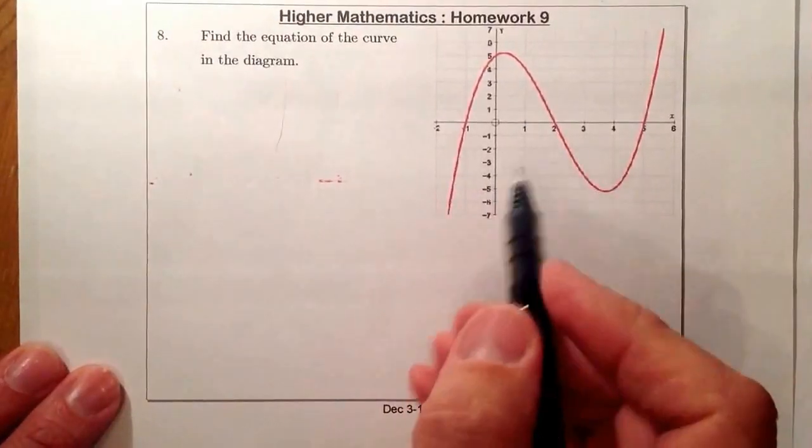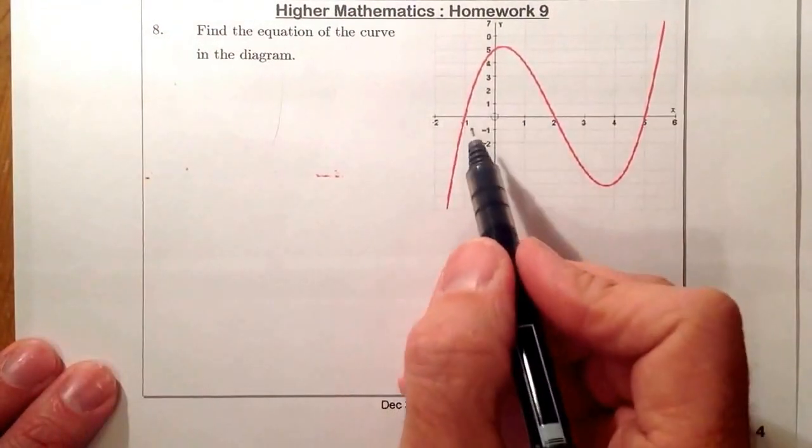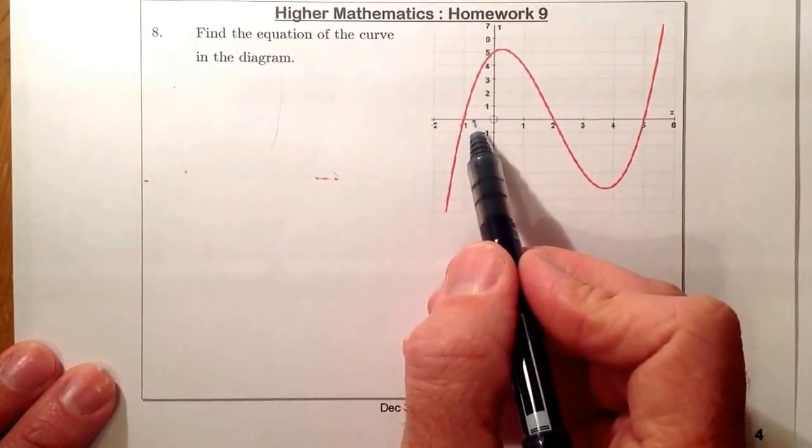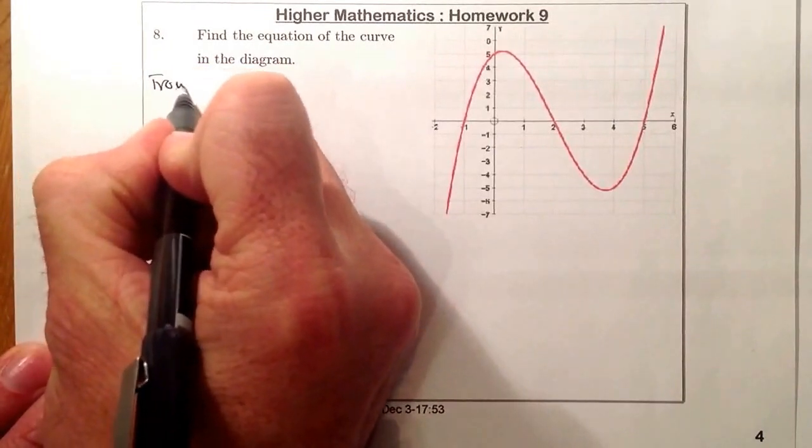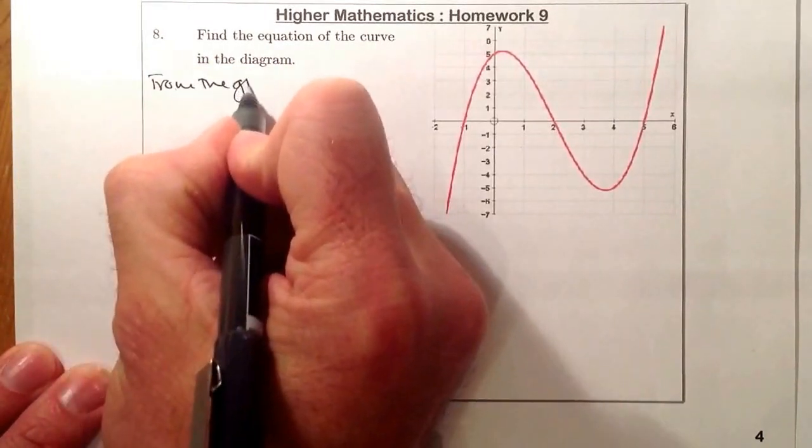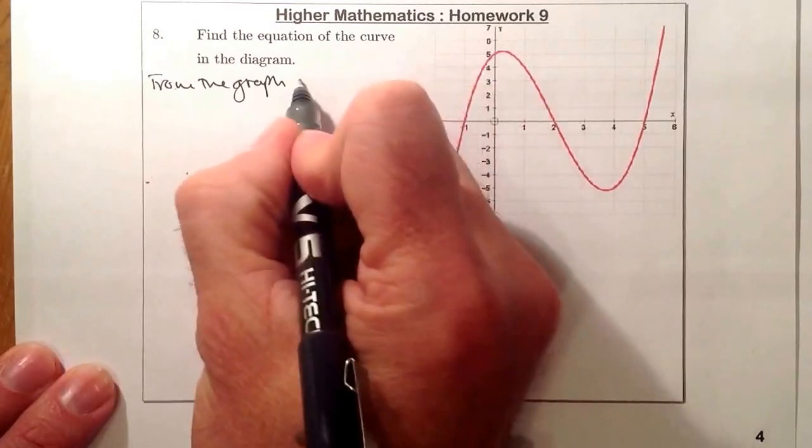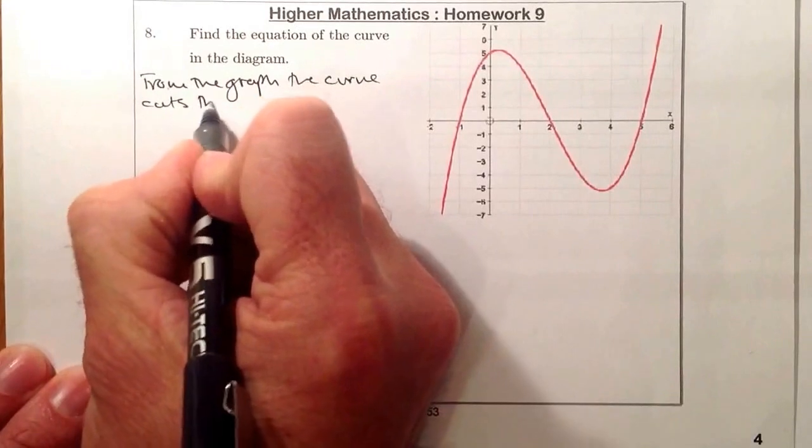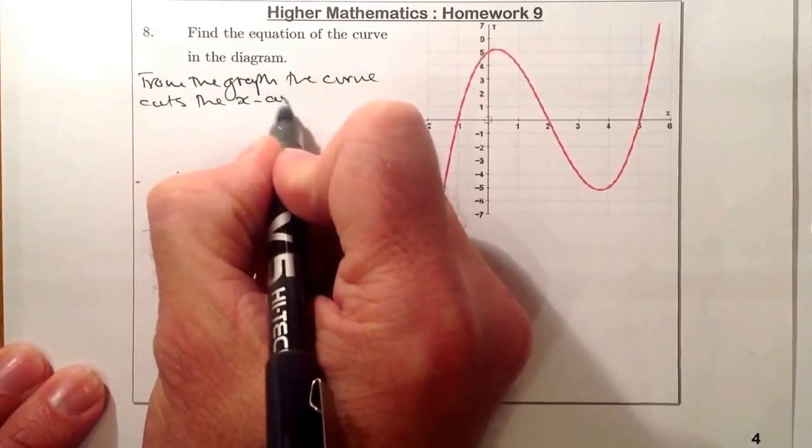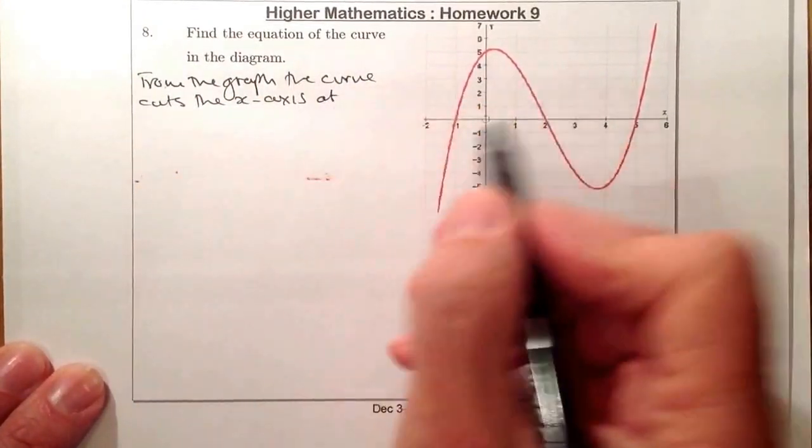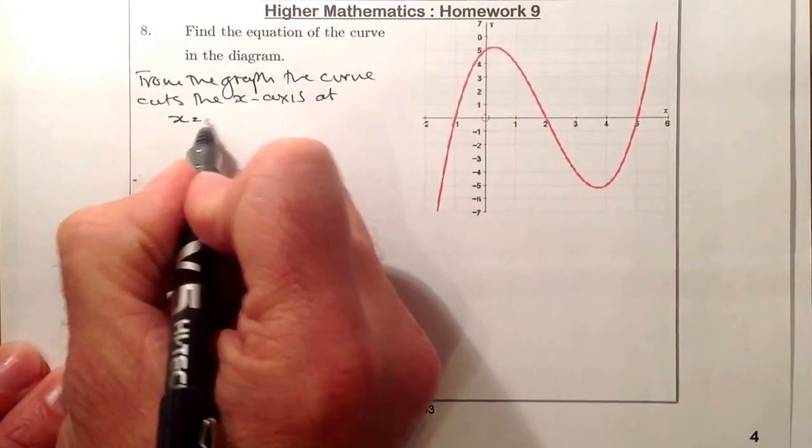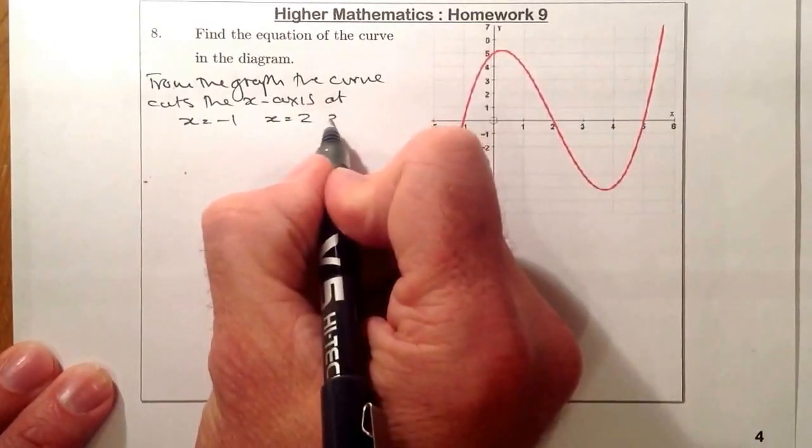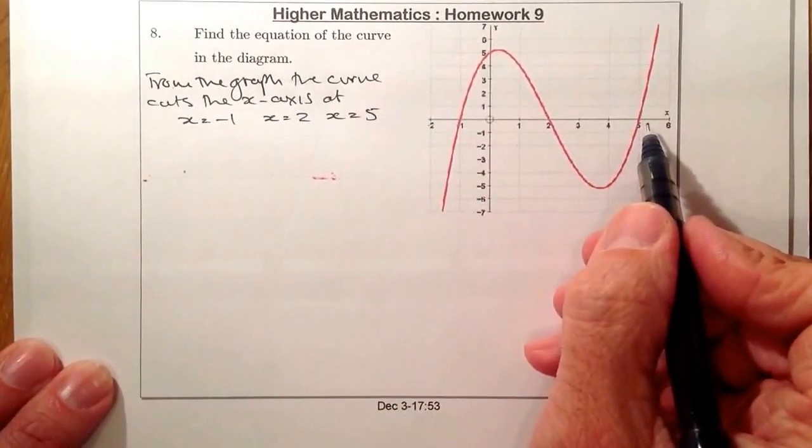So what I can see already from the graph is I've got the graph cutting through the x-axis at these points here. So that's going to give me the roots. So from the graph, the curve cuts the x-axis at the point x equals minus 1, x equals 2, and x equals 5. So they're the things that I'm going to use.